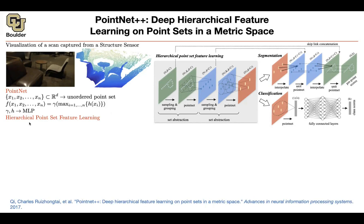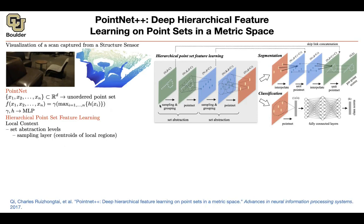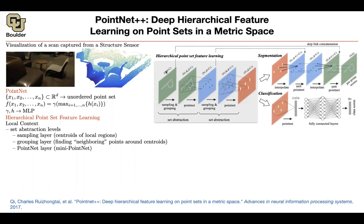So what are we going to do with hierarchical point set feature learning? We need to take into account the local context — that's the whole idea of PointNet++. There is going to be a set abstraction level with a sampling step for finding the centroids of local regions, and a grouping layer to find neighboring points around those centroids. N is the number of points in your point cloud, D is 3 for a 3D point set, and C could be any other features — that's why you have D plus C.